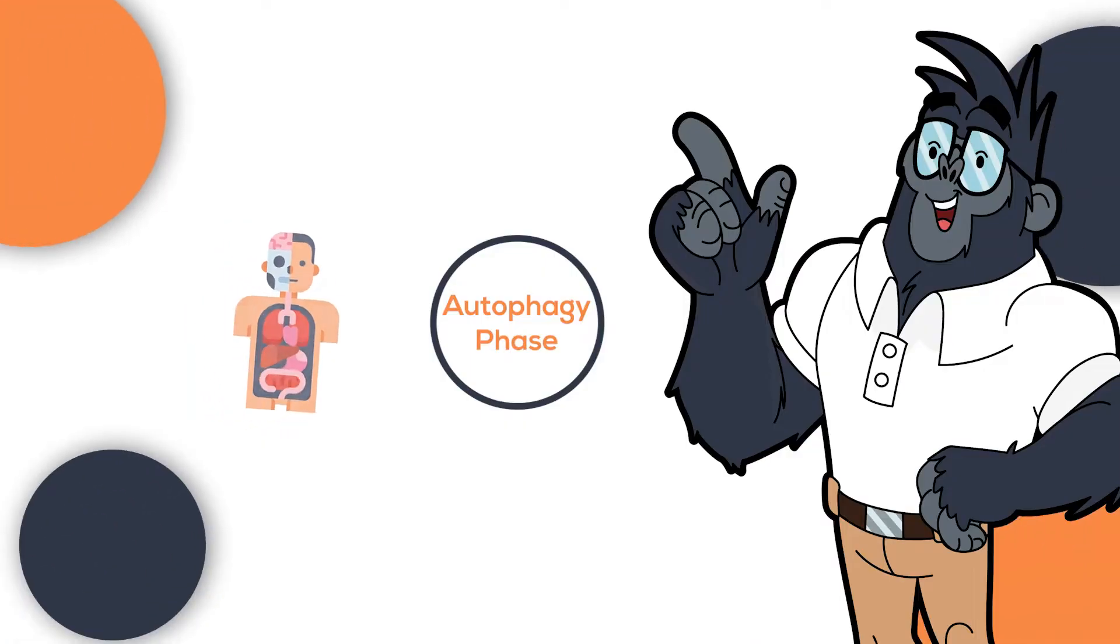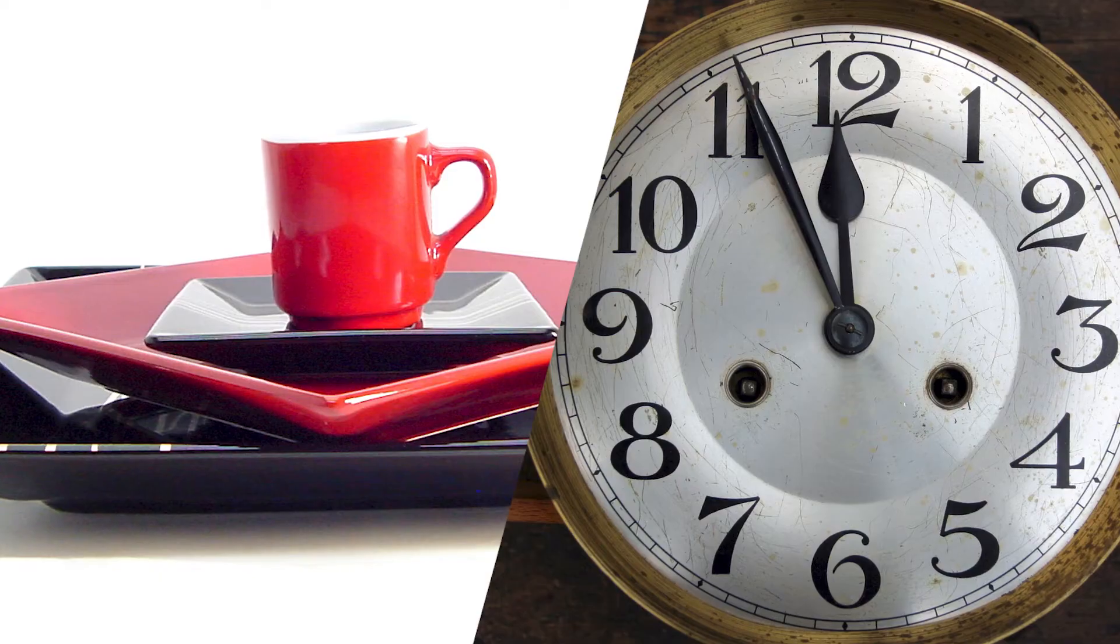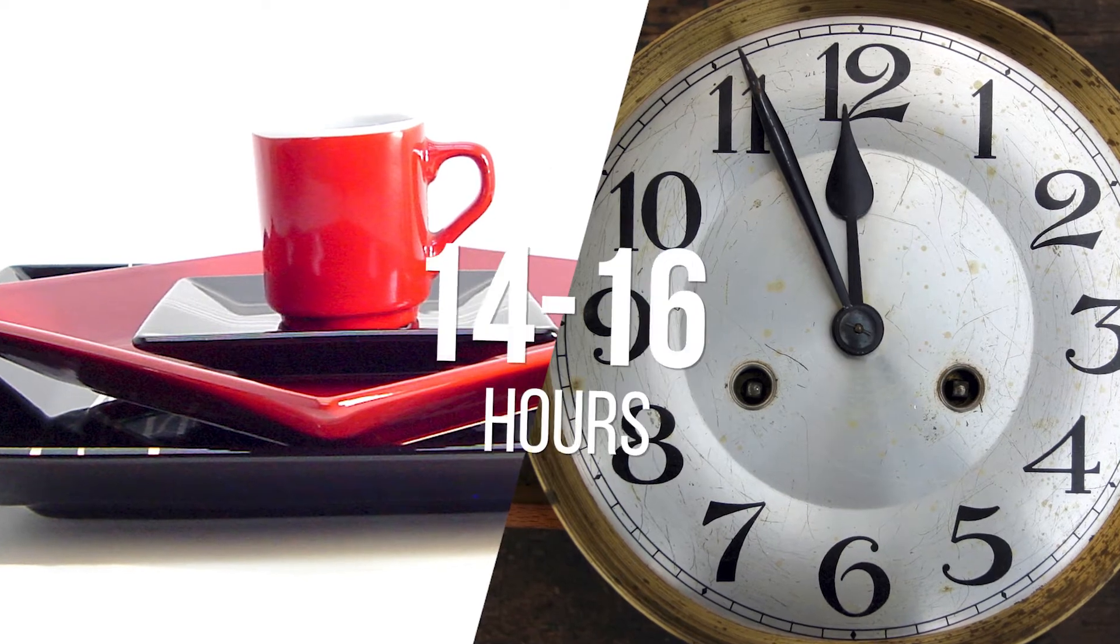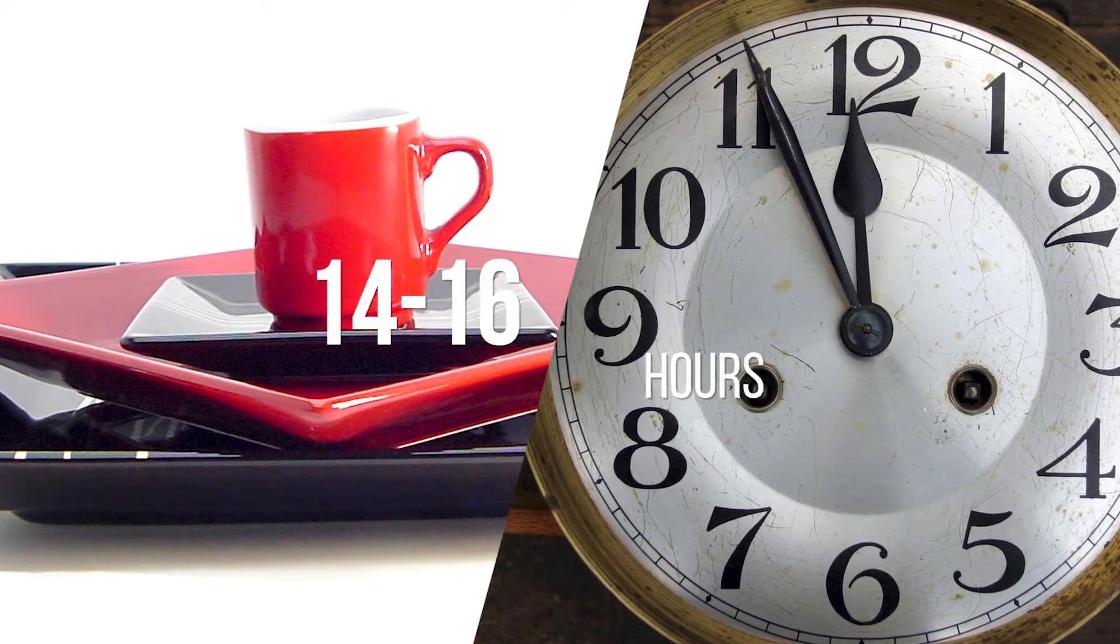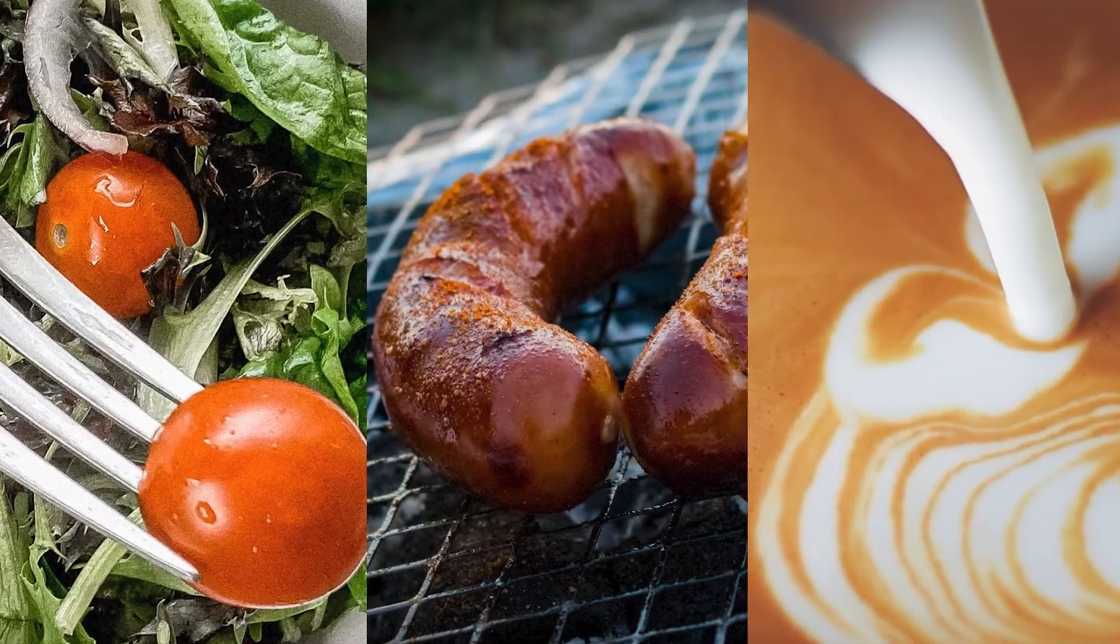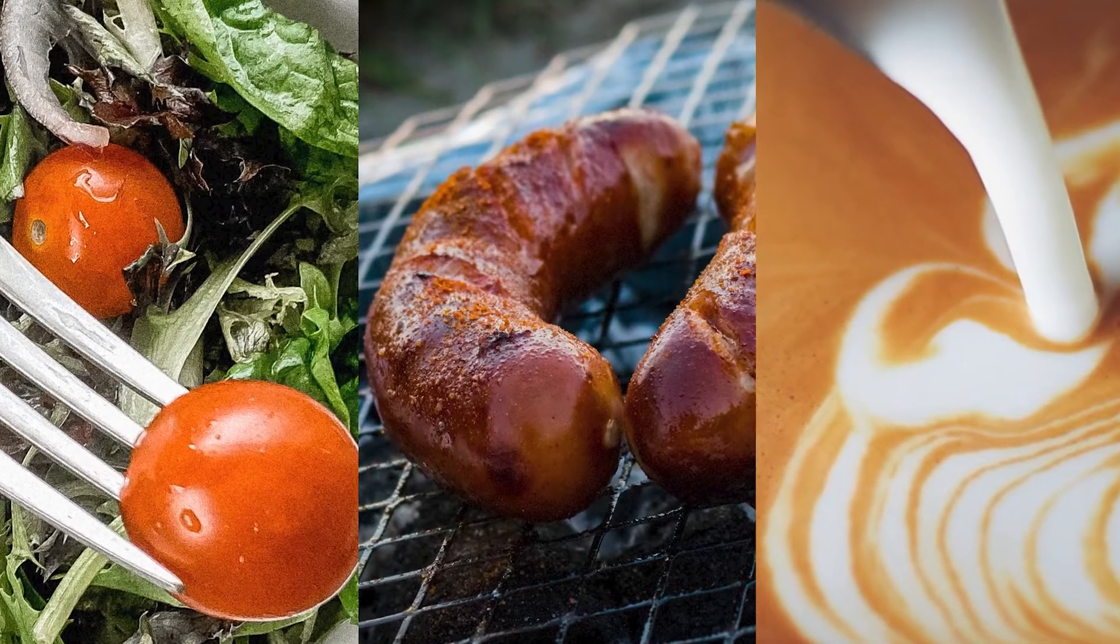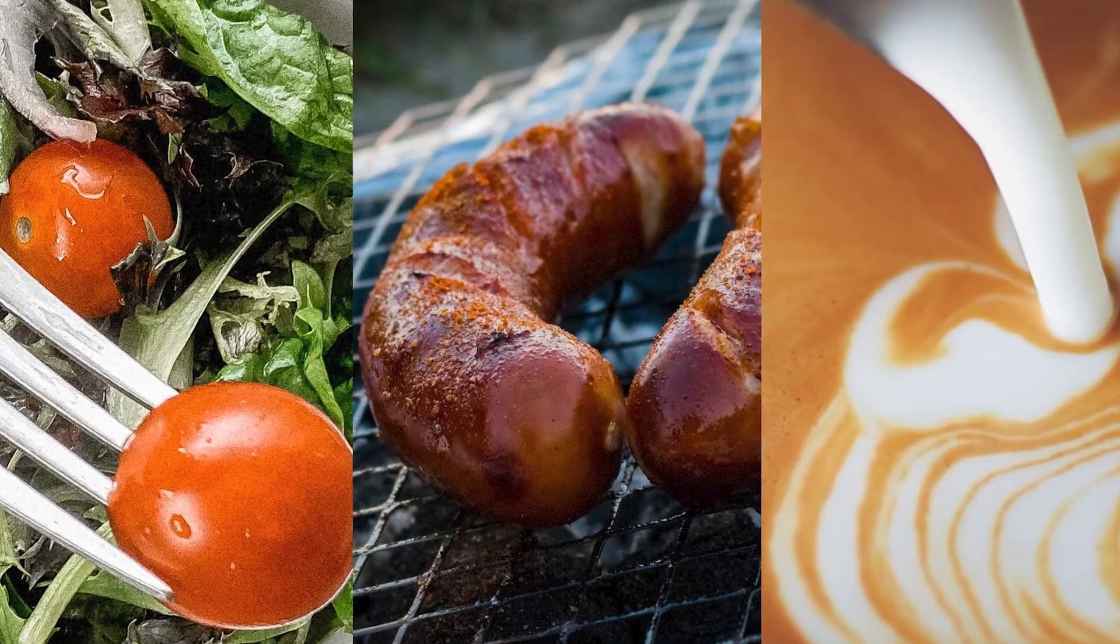For the body to enter the autophagy phase, you will need significantly low liver glycogen, and you will only achieve this after 14 to 16 hours of fasting. In addition, you will only achieve autophagy depending on the type of intermittent fasting you are practicing.